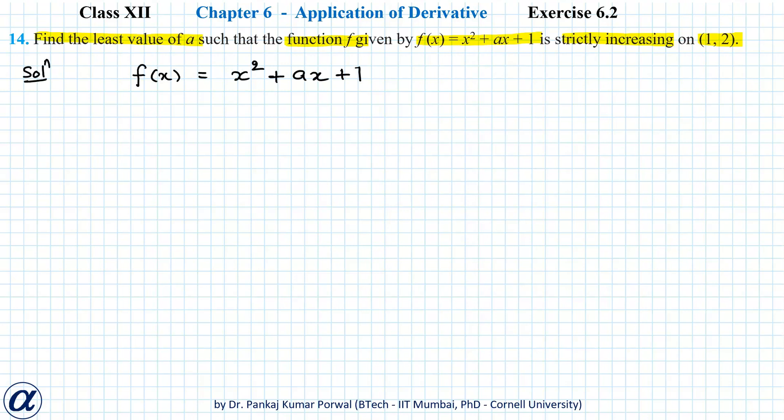For a function to be strictly increasing, its first derivative f'(x) should be strictly greater than zero. So f'(x) for our function will be 2x + a, and this should be strictly greater than zero. This gives me a > -2x.